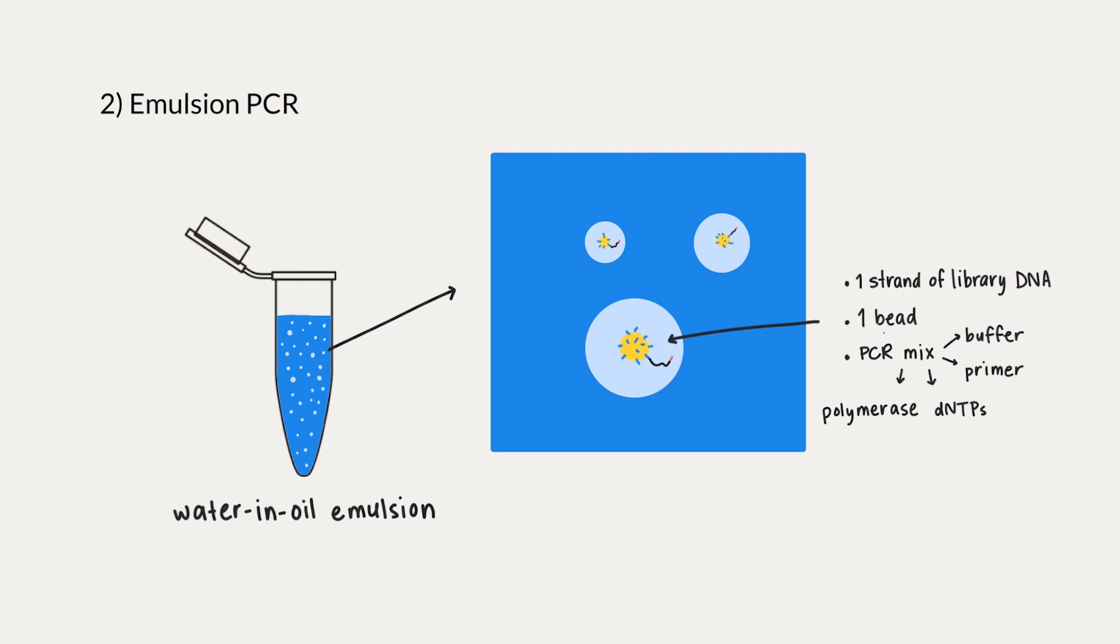Inside these drops is not only one bead bound to one template DNA, but the components you need in a typical PCR reaction, like polymerase, dNTPs, primer, and buffer. So, if you think about it, these microvesicles act like a micro-reactor for PCR to occur and amplify the DNA strands so that we have thousands of copies.